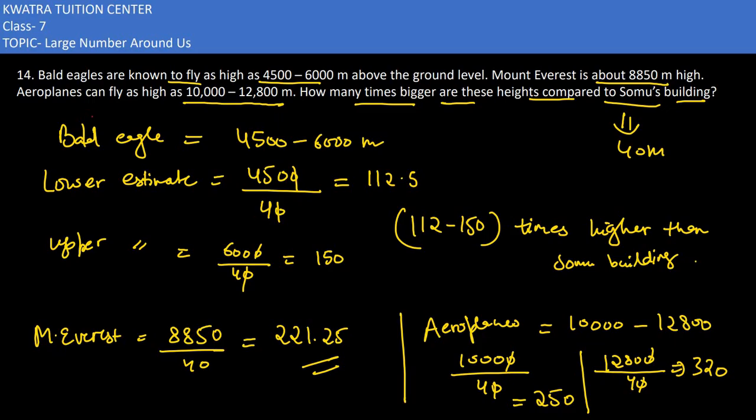So to summarize: airplanes fly about 250 to 320 times higher than the Somos building — at least 250 times and up to 320 times higher.